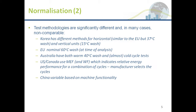That's further complicated by differences in test methodologies. Korea has different methods for horizontal and vertical units and different wash temperatures. The EU used to, at the time of this analysis, have a 60-degree fixed temperature wash. Australia has a 40-degree warm wash, but almost all washing actually happens in cold. The US and Canada have a more realistic mix of wash temperatures and cycles, but those cycles are selected by the manufacturer and not necessarily declared, so analysts have no idea what happened. And China has variable test methodologies and temperatures depending on machine functionality.